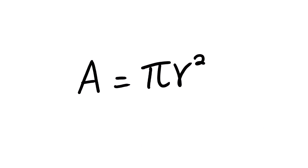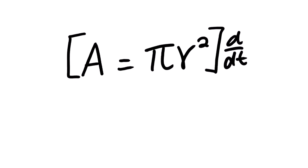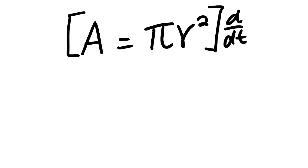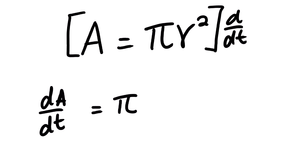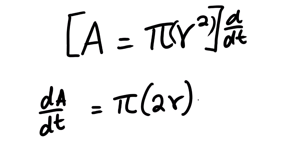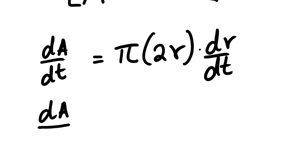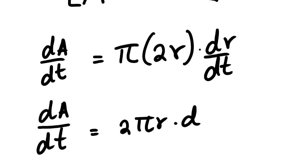Now let us derive this equation with respect to t. The derivative of A is 1, so we have 1 multiplied by dA over dt. Pi is a constant, so we can simply derive r squared. The derivative of r squared is 2r multiplied by dr over dt. Simplifying this, we have dA over dt equal to 2πr multiplied by dr over dt.